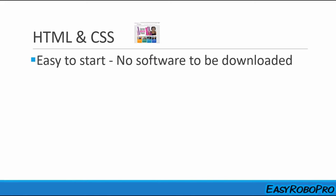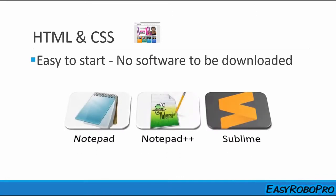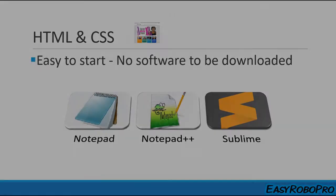HTML and CSS are easy to start and easy to learn. There is no particular software to be downloaded — you can simply start coding on a notepad, or download software like Notepad++ or Sublime Text. You can also see the visual output, which is very important when considering a programming language for a kid.